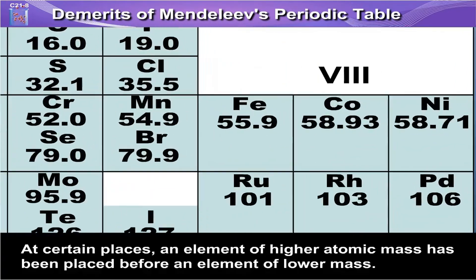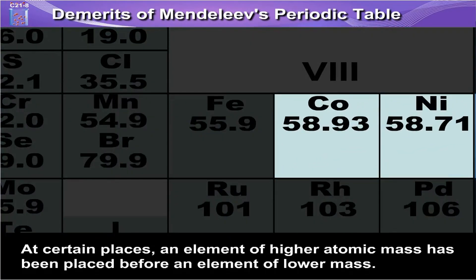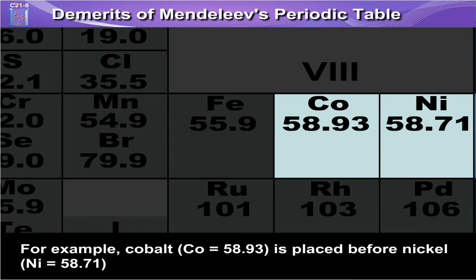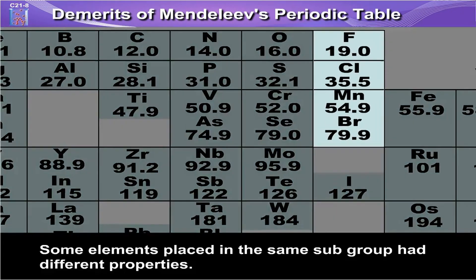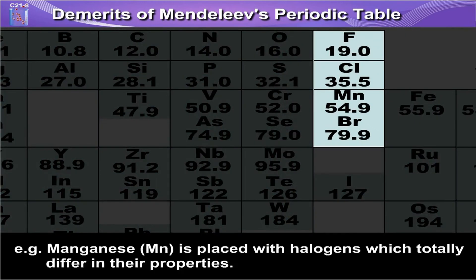At certain places, an element of higher atomic mass has been placed before an element of lower mass. For example, cobalt (Co) with atomic mass 58.93 is placed before nickel (Ni) with atomic mass 58.71. Some elements placed in the same subgroup have different properties — for example, manganese is placed with halogens, which totally differ in their properties.